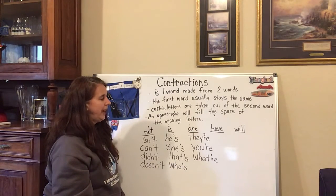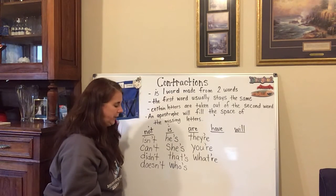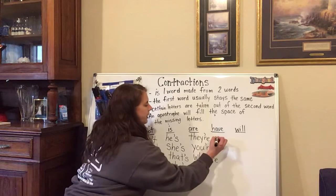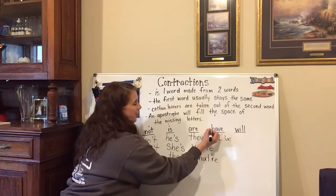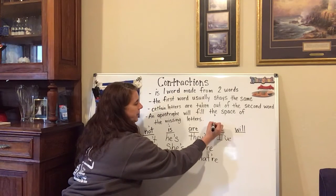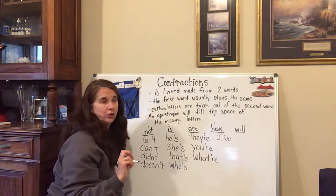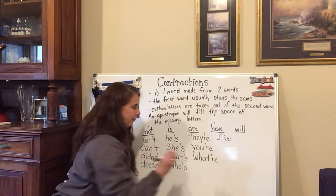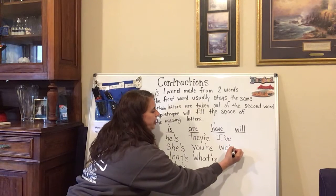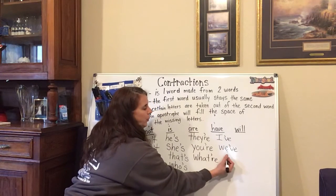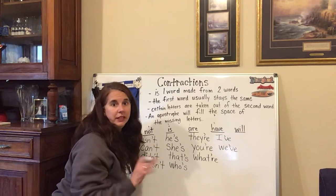Let's go to 'have.' In 'have,' the apostrophe is actually going to take the place of the H and the E — so it's going to take the place of two letters. 'I have' becomes 'I've.' 'We have' becomes 'we've.' Again, 'we' stays the same, and the apostrophe is taking the place of H and E. The V and E stay.